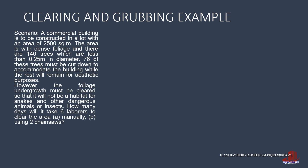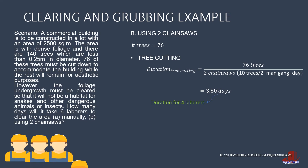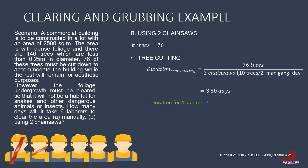For the second case when two chainsaws are rented for the job, starting with tree cutting, the formulation would be 76 trees divided by two chainsaws with individual output of 10 trees per 2 man-gang per day, and that will result in 3.8 days. Take note that in these days, there are four laborers working — two are the handlers and two are the assistants.